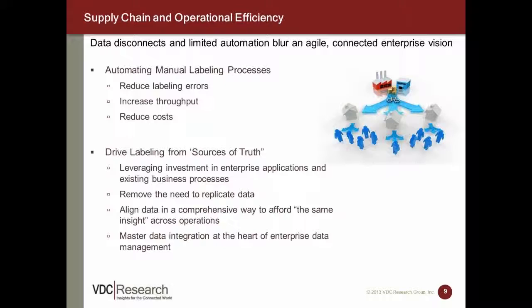In recent years, labeling has become in some ways a new frontier for improving overall efficiency, especially as supply chains have become more global and connected. At the core of efficiency is the removal of manual labeling processes that can result in products or goods being mislabeled. The end result of mislabeling could be a source of fines, penalties, and lost business, in addition to the inefficiency it causes.